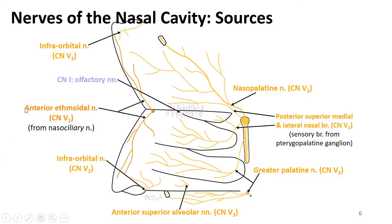The V1 branch we'll talk about is the anterior ethmoidal nerve — a branch from the nasociliary nerve. Keep in mind this is nasociliary, not palatine. The nasociliary nerve within the orbit gives off anterior and posterior ethmoidal nerves, and the anterior ethmoidal enters and supplies the anterior superior portions of both the lateral wall and the septum of the nasal cavity. More posterior and inferior we see supply through V2.